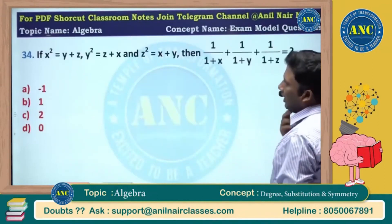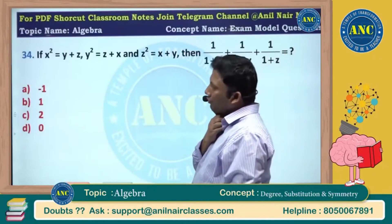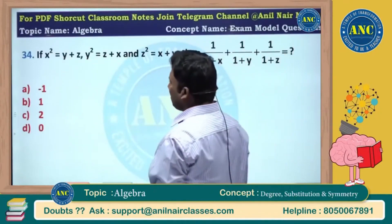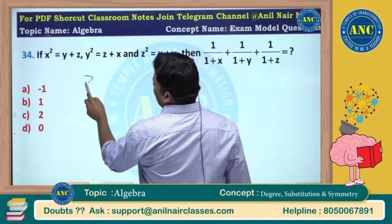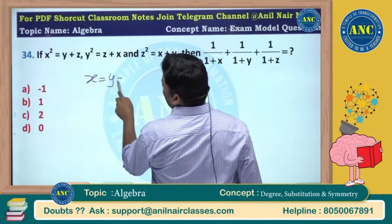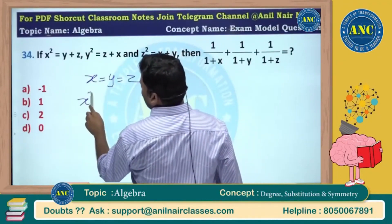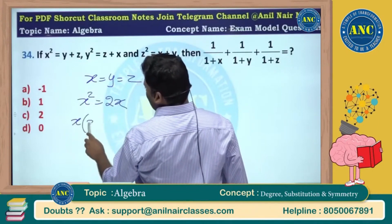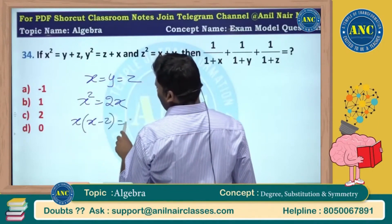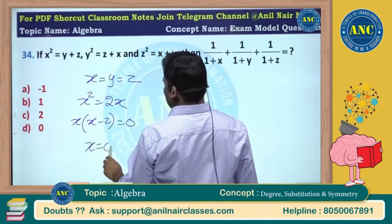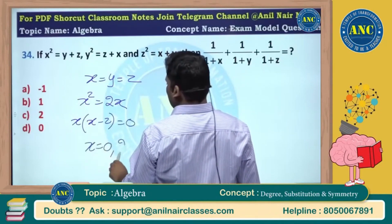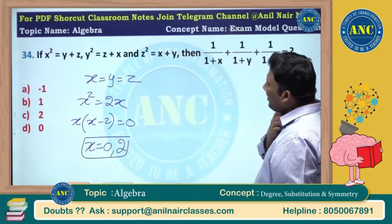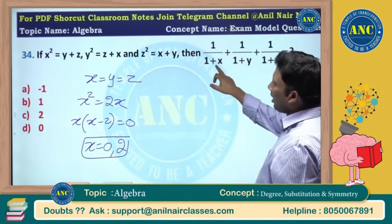I hope the idea is clear. For the 34th question: x is replaced with y, y is replaced with z — symmetric function. Make x equivalent to y equivalent to z. Then x square equivalent to 2x, so x into x minus 2 equivalent to 0, meaning x is 0 or 2.